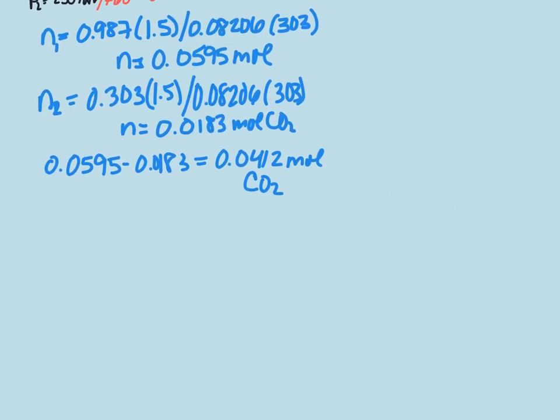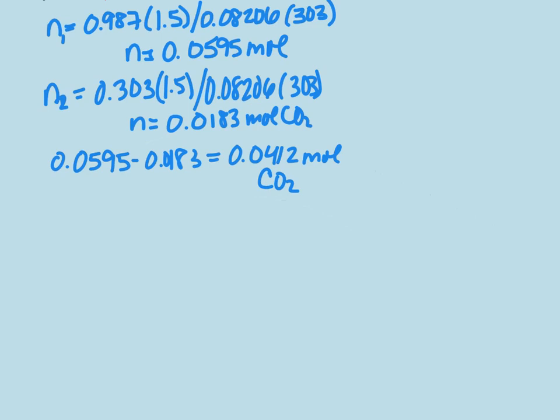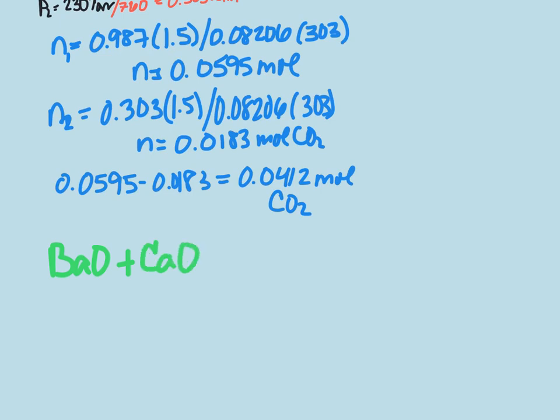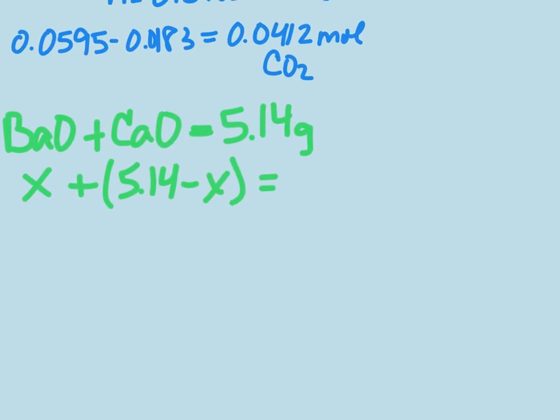Next what we need to think about is how to convert the BaO and CaO into moles so that we can use the moles of carbon dioxide used in order to figure out the percentages of each. So we know that there is both the barium oxide plus calcium oxide combined to create 5.14 grams. So if we make barium X, and we can make calcium oxide 5.14 minus X, then we're able to go ahead and think about these in terms of molar masses.